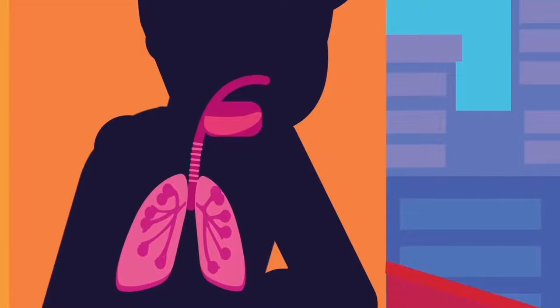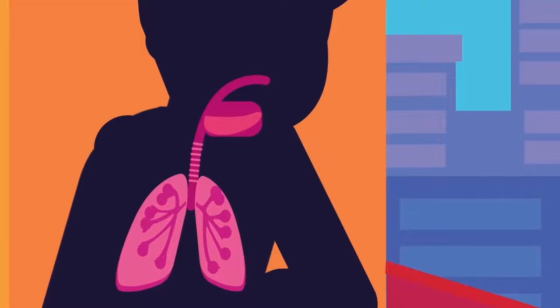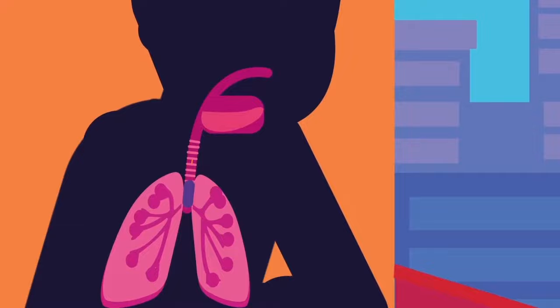Air enters our body through the nostril, nasal passages, pharynx, larynx, trachea, bronchi and bronchioles, before entering the alveoli.